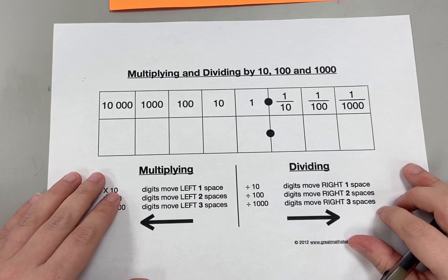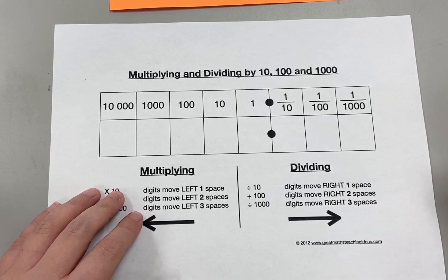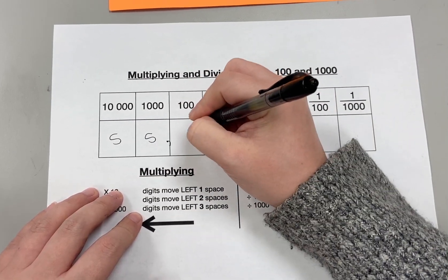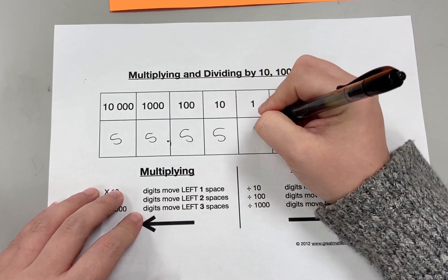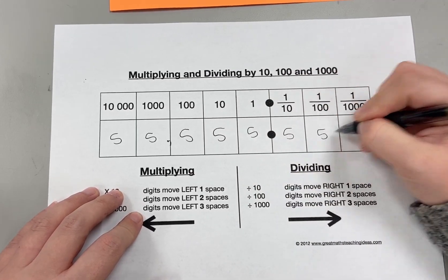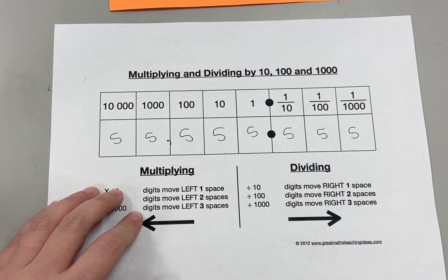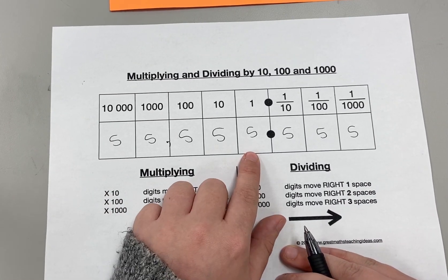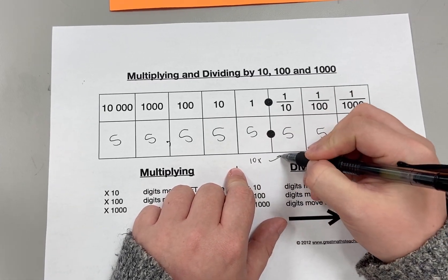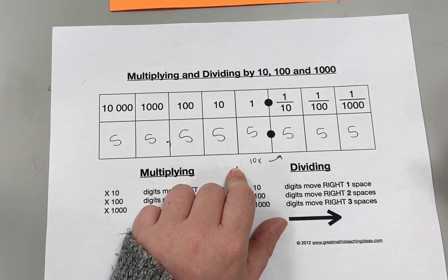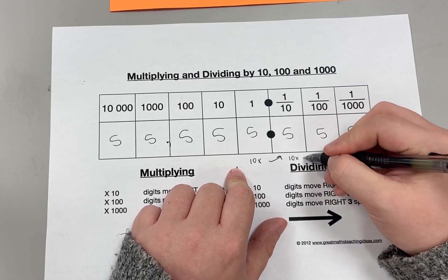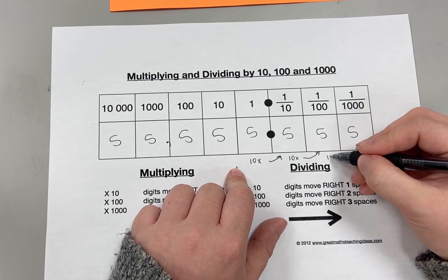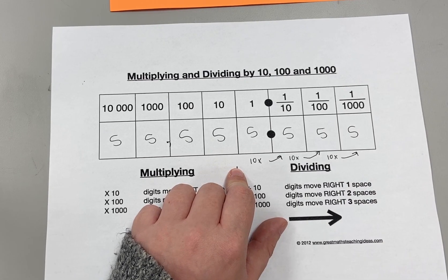Here is this place value chart. Let's just say that I had 55,555 and 555 thousandths. That would mean that the five in the ones place is ten times bigger than the five in the tenths place. And the five in the tenths place is ten times bigger than the five in the hundredths place. And the five in the hundredths place is ten times bigger than the five in the thousandths place.